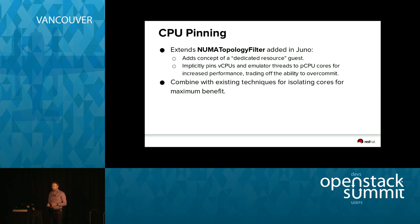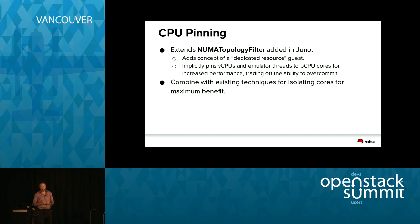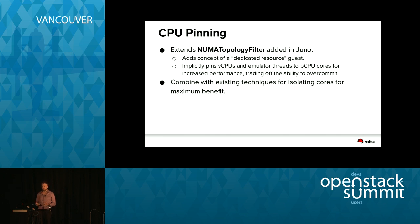To simplify and abstract that: you say in your guest request that you want dedicated resources, then the scheduler and compute agent are responsible for finding available cores to pin that guest to. You are effectively trading off the ability to over-commit memory and CPU. The NUMA topology filter and agent code do that implicitly, but you need to be aware of it. There's a performance benefit — dedicated cores, dedicated memory — but as a result your consolidation ratios aren't as good.